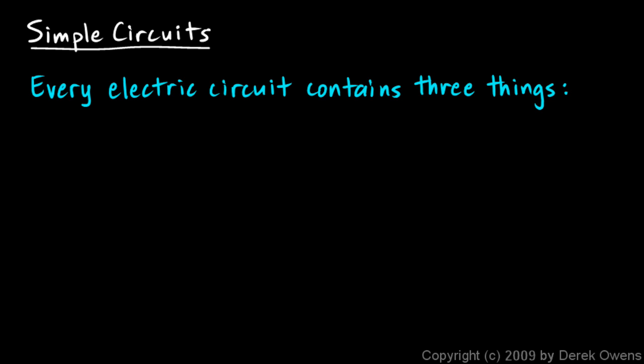Now we're going to talk about simple circuits and I'll explain what a circuit is and give you an example. First you need to know that every electric circuit contains three things, and you can write these down.